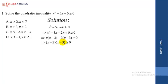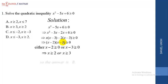So we have x minus 2 times x minus 3 greater or equal to 0. When two products multiplied equal 0, either the first or the second factor is 0. So either x minus 2 is greater or equal to 0, or x minus 3 is greater or equal to 0. Solving: x is greater or equal to 2, or x is greater or equal to 3. Looking at the options, the answer is B.